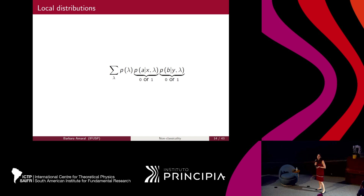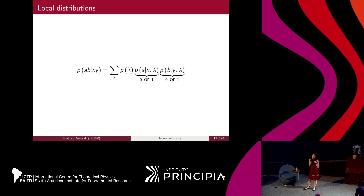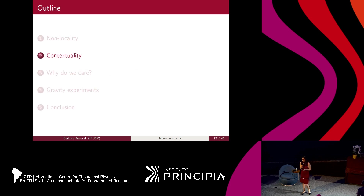Hence, if I have some theory satisfying these three hypotheses, my probabilities must satisfy these conditions. This implies a lot of restrictions that we can test. So if I have the statistics of an experiment, I can test whether these conditions hold or not, and say whether that experiment can be explained with this kind of theory. This is what we call local distributions, and it is the definition of classicality when we talk about Bell scenarios.